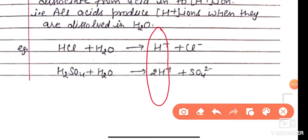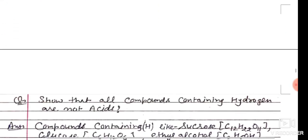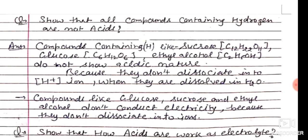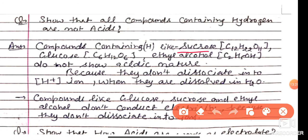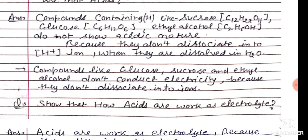Next question: What do all acids have in common? All acids release H-ion when they are dissolved in water. Next: Show that all compounds containing hydrogen are not acids. Compounds like sucrose, glucose, and ethyl alcohol do not show acidic nature because they do not dissociate into H-ion when dissolved in water.